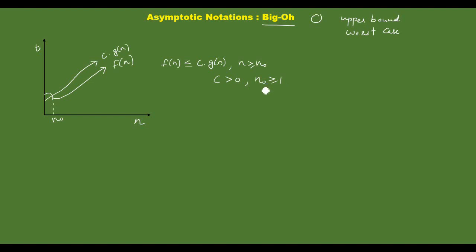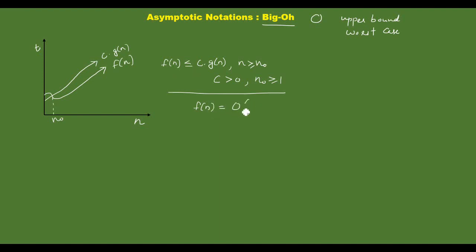n-naught is an input size. If it is a minimum value, we can write f of n is equal to Big O of g of n.